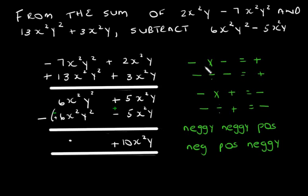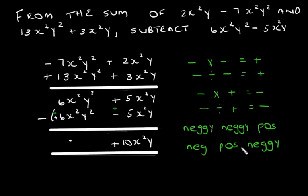These notes are to help you remember the sign rules when multiplying: a negative times a negative is a positive, and a negative divided by a negative is a positive. A negative times a positive is a negative, and a negative divided by a positive is a negative. To help remember: 'neg neg pos, neg pos neg' — negative times or divided by a negative gives positive; negative times or divided by a positive gives negative.